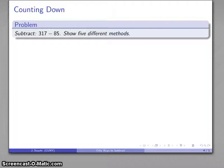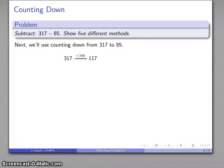We could also do counting down. So this is going to count down from 317 down to 85. So I start at 317, and I go backwards a bit. I want to stop at 85, so maybe I'll start by going back 200. That takes me down to 117.